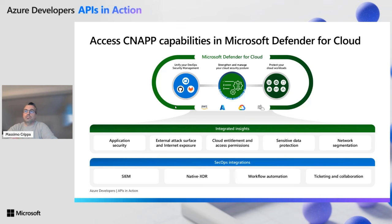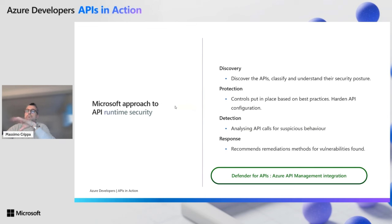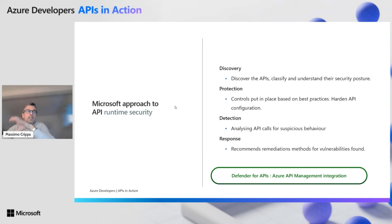We also have all the integration with, for example, Microsoft Sentinel or any other SIEM you might use. We can leverage workflow automation to manage the security recommendations that have been surfaced. We can create security workbooks and so on. We will look in detail at Defender for APIs for runtime security in API workloads, which allows us to discover the APIs we have, understand the API catalog and their security posture, put in place security controls to protect our configuration, detect suspicious behavior by analyzing traffic, and then surface recommendations to our security team.